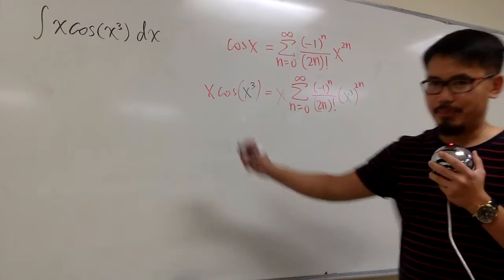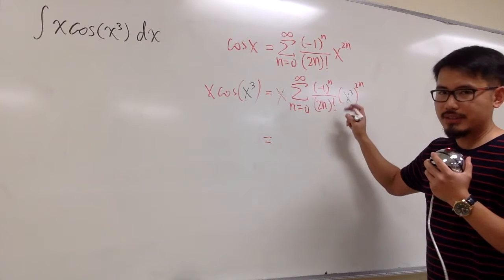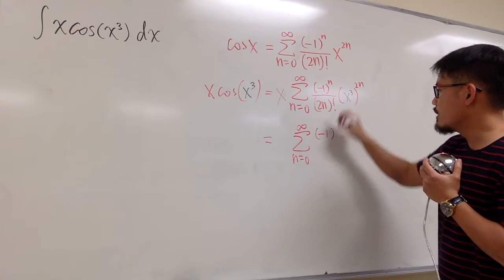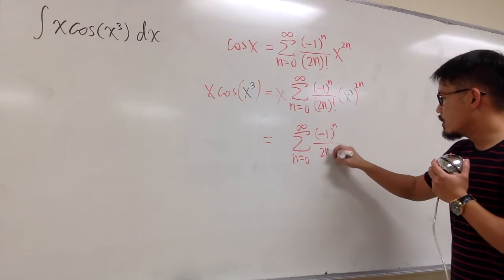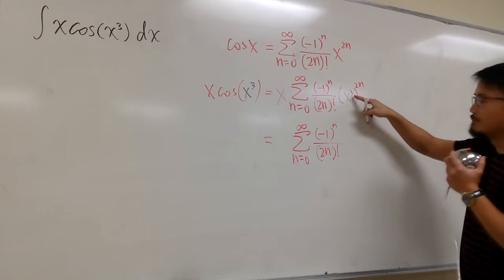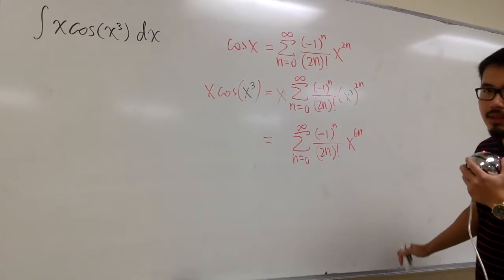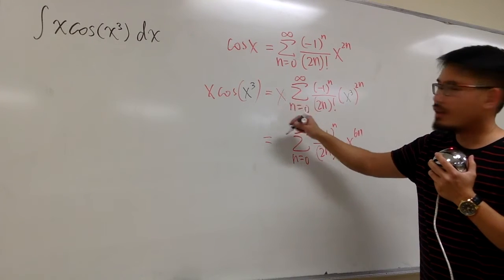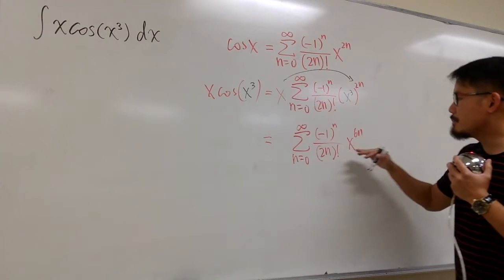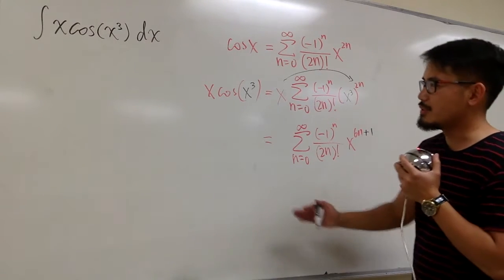We can simplify this a little bit. The sigma still goes from 0 to infinity, with negative 1 to the nth power over (2n)!. For x to the 3rd power raised to the 2n power, we multiply the exponents — 3 times 2n gives 6n — so we have x to the 6n. Then distributing the x out front, which is x to the 1st, we get x to the 6n plus 1. So this is the infinite series for x times cosine of x to the 3rd power.